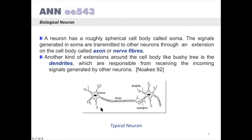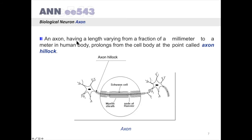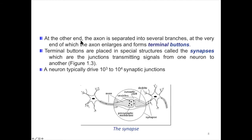An axon, having a length varying from a fraction of millimeter to a meter in human body, prolongs from the cell body at the point called axon hillock. So this is the starting point of the axon, which is called axon hillock.